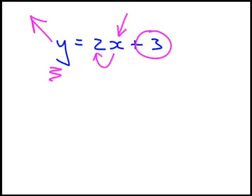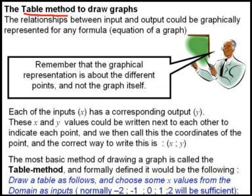But ultimately what we have here is the equation of a straight line graph, or any graph for that matter, which could be represented by a formula. The relationship between the input and the output could be graphically represented for any formula, or the equation of the graph. Once we get to the graph, it's a representation of the relationship between the inputs and the output values.